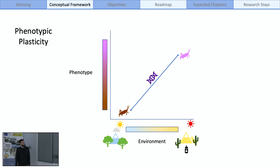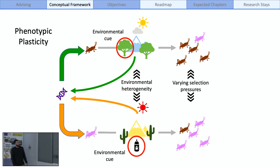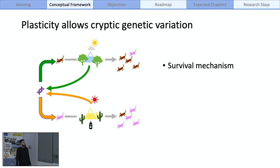I would like to introduce the concept of reaction norms. That is a good way to represent this relation between environment and phenotype. The main ingredients of phenotypic plasticity are environmental heterogeneity that usually entails varying selection pressures, and also the availability of environmental cues that allows organisms to assess the environmental condition and produce the proper phenotype.